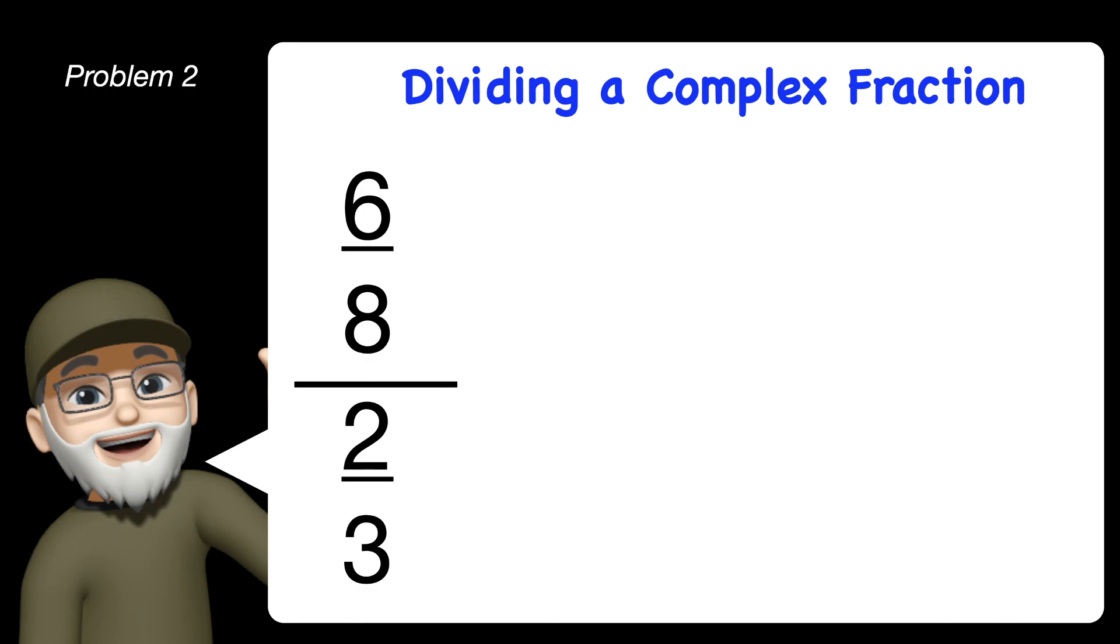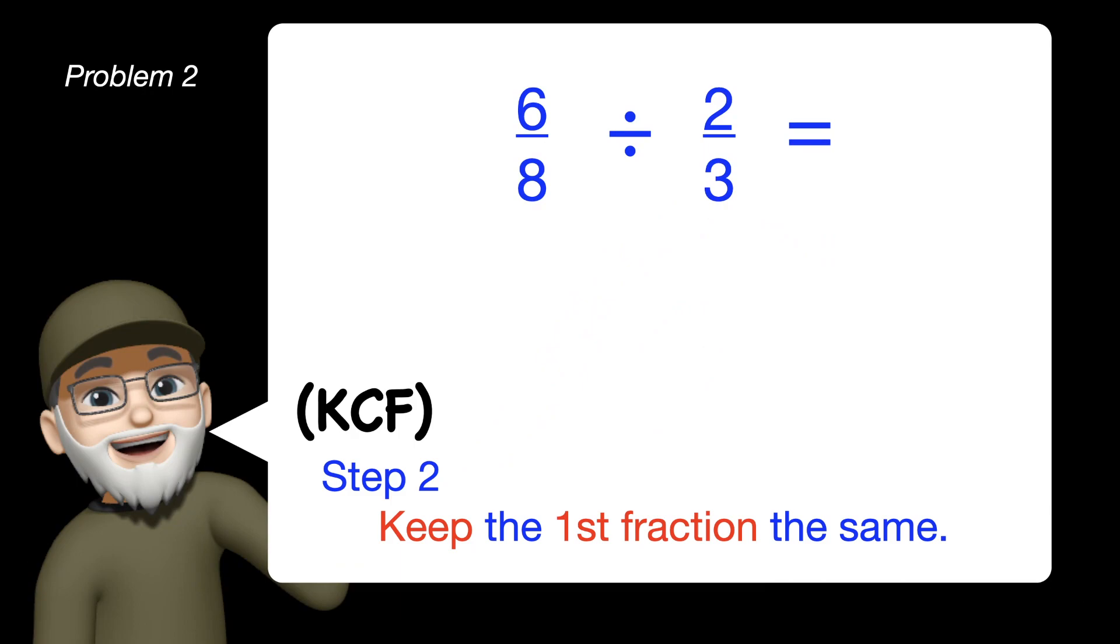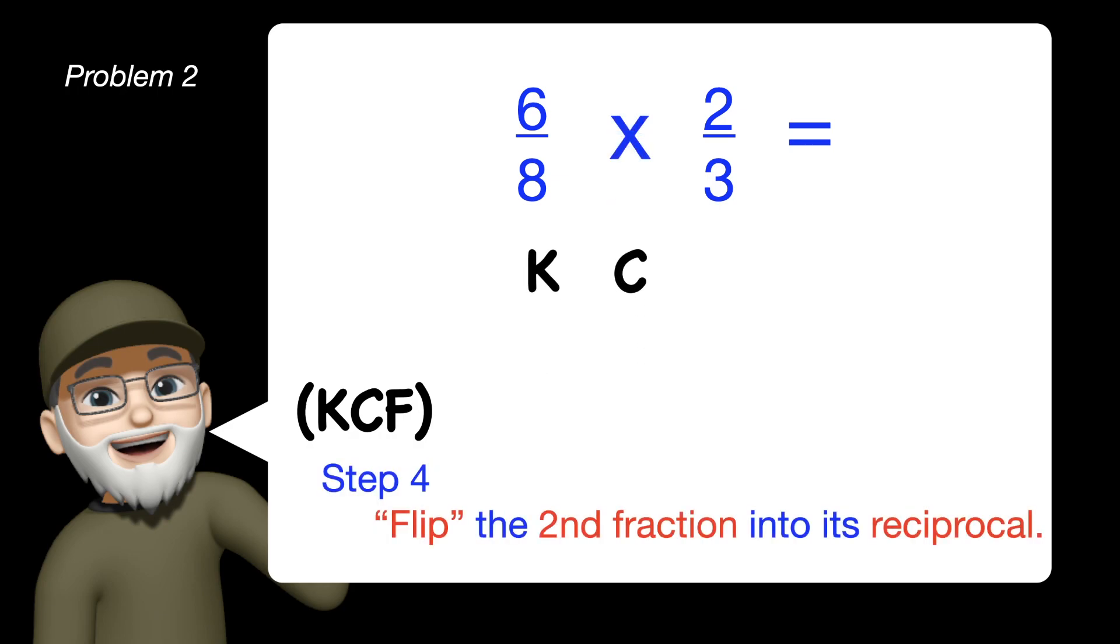Let's look at a second problem dividing a complex fraction. Our first step is to rewrite the problem from left to right, dividing our numerator by our denominator. We then apply our KCF strategy. We keep the first fraction the same, we change division into multiplication, and we flip the second fraction over into its reciprocal.